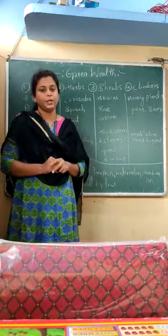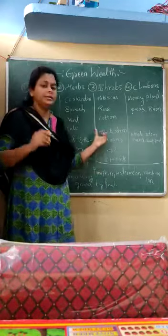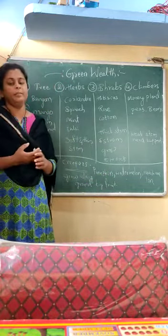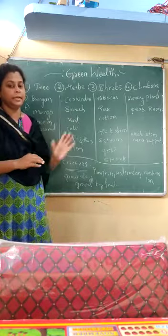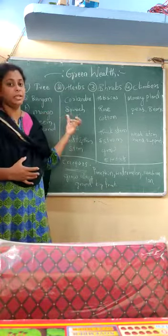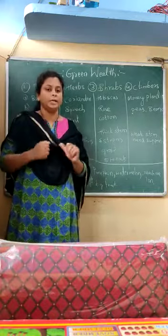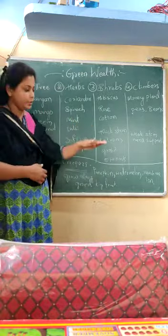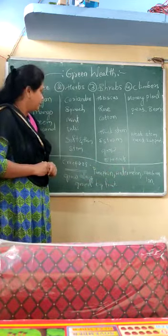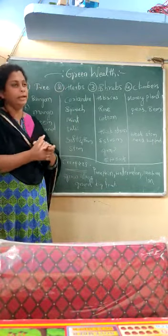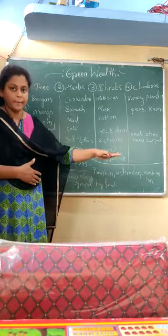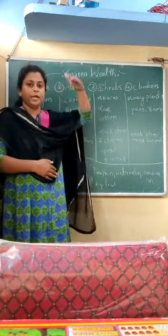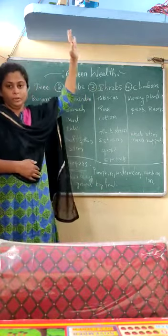The third type is shrubs. Shrubs have a thicker and stronger stem compared to herbs, but not as thick or strong as trees. Compared to herbs - where tulsi, spinach, coriander, and mint grow only to a small height - shrubs can grow five to six meters, which is above my height. So shrubs have a greater growing capacity than herbs.